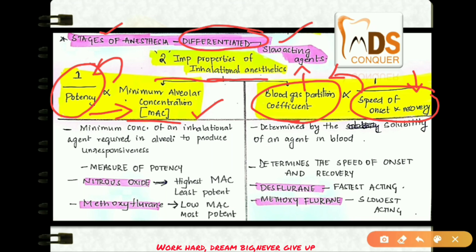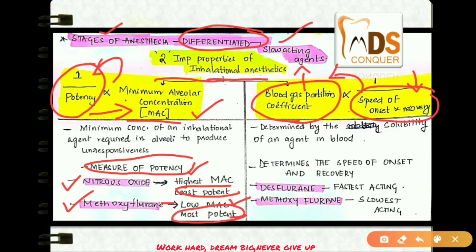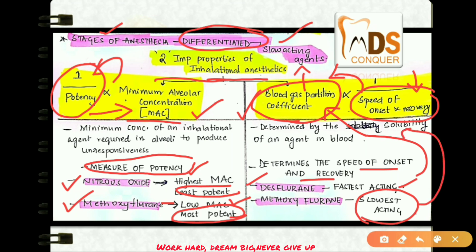MAC measures the potency of a drug. Nitrous oxide has the highest MAC and is therefore the least potent. Methoxyflurane has the lowest MAC and is therefore the most potent drug. Regarding the blood-gas partition coefficient, which determines speed of onset and recovery: the fastest-acting drug with the lowest blood-gas partition coefficient is desflurane, and the slowest-acting drug with the highest blood-gas partition coefficient is methoxyflurane.